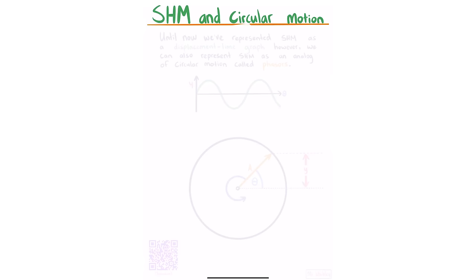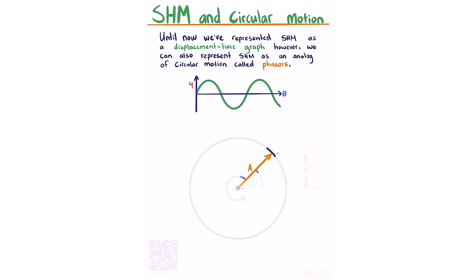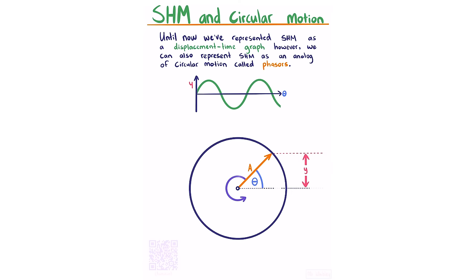SHM and circular motion. SHM can be represented not just as a displacement-time graph but as an analogue of circular motion called phases. A vector of magnitude A traces a circle counterclockwise; its angle to the x-axis is theta and its vertical component is the displacement Y.